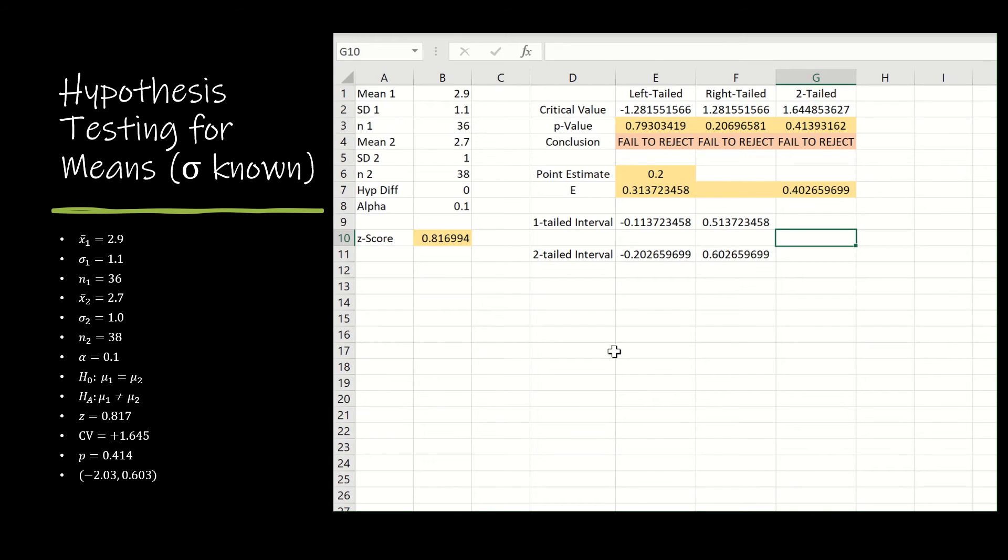Let's take a look at how Excel can do all of that fun work for us. I strongly encourage you to do that. I'm still using those same inputs: the mean, standard deviation, and sample size for the first sample and for the second. Don't forget the hypothesized difference and then alpha.